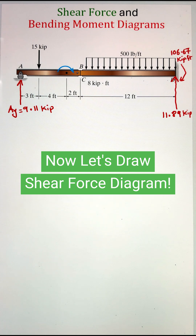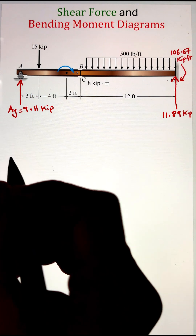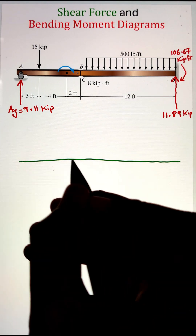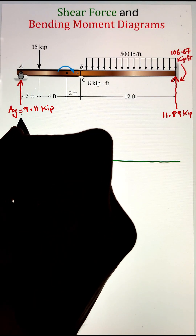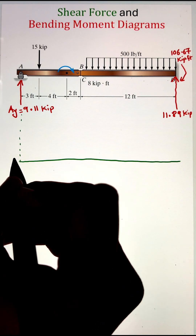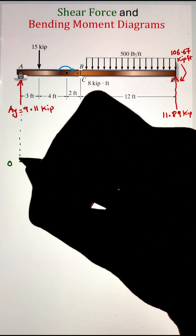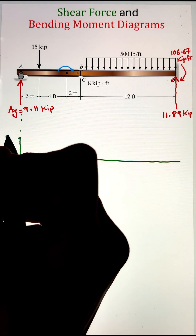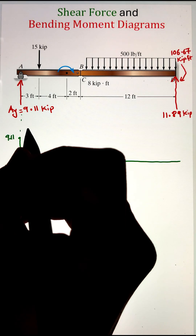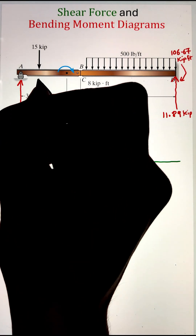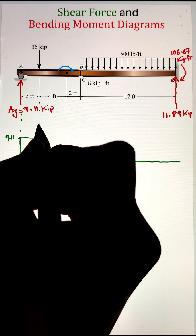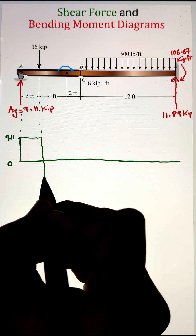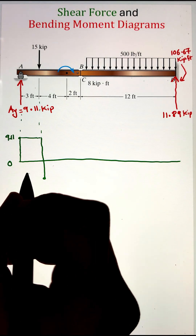Now let's draw the shear force diagram using the graphical method, utilizing the loading acting on the beam. Starting at point A, the 9.11 kilopound upward reaction causes a jump up from 0 to 9.11. The 15 kilopound downward point load causes a jump down — subtracting 15 gives negative 5.89. After that, with no additional loading until point C, we have a flat line.